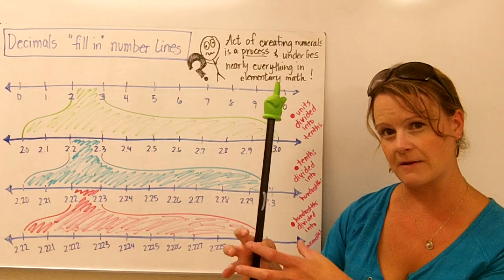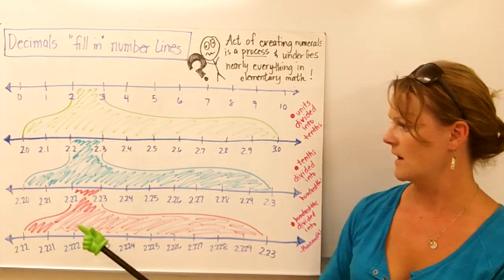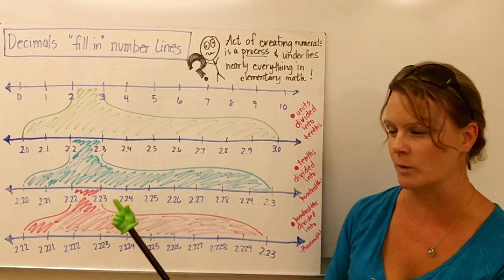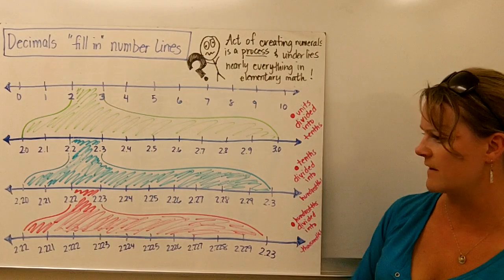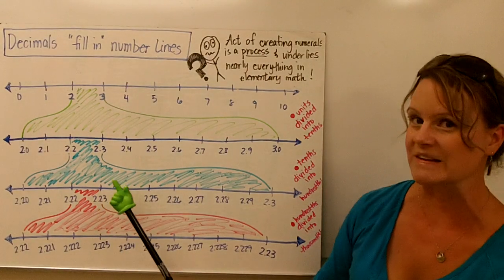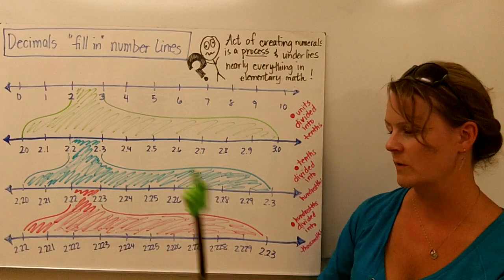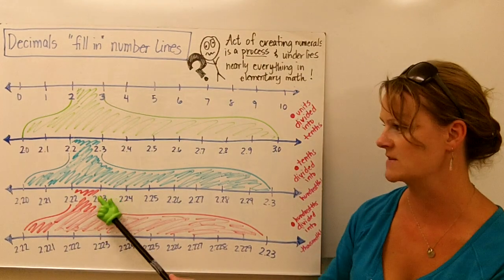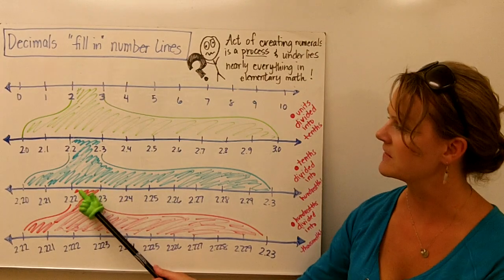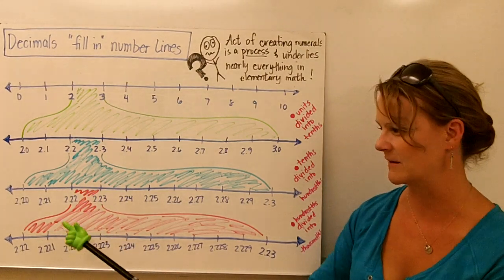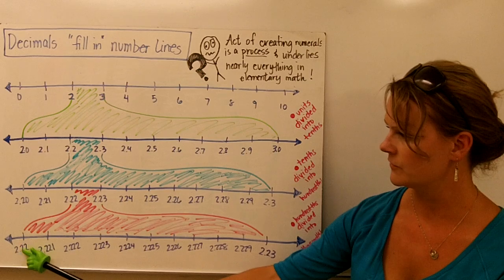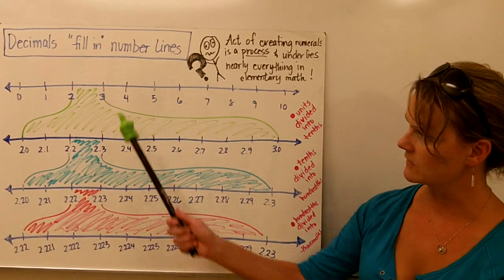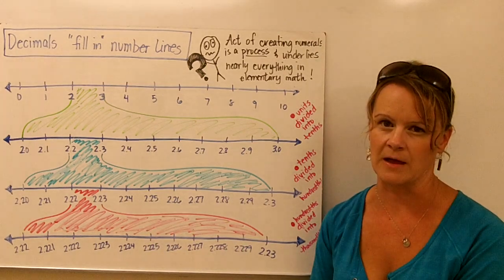I'm filling up as I go. The number line continues to get full, and we can continue this process long after this board is finished. I'm just going to do one more step. I'm going to take my hundredths and divide them into thousandths. And that's what you see here. I went from 2 and 22 hundredths to 2 and 23 hundredths. We're talking about tiny little values here. And I'm still filling the in-between places on my number line. So that's how we fill a number line with our decimals.